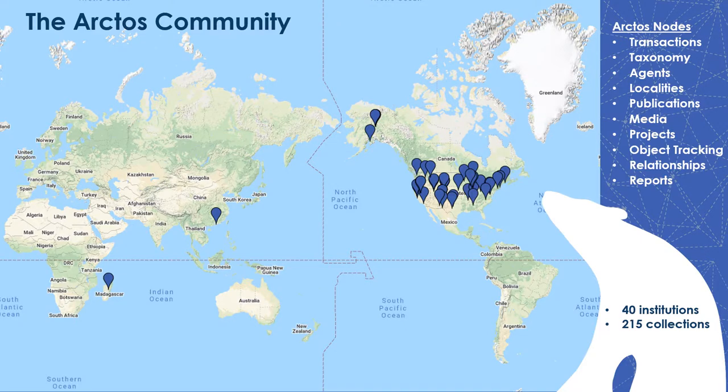For some background, Arctos has been online since 1999 and provides a full suite of tools for hosting, managing, and linking museum object data. Arctos brings together museum professionals, information experts, researchers, and educators from diverse disciplines to form a consortium of more than 215 collections at 40 institutions. We truly consider Arctos to be a tangible synthesis of this community, and therefore able to respond to emerging innovations and community needs.